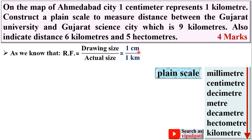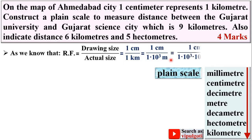Since both units are different, we convert kilometer into centimeter. One kilometer equals 10³ meters, and one meter equals 10² centimeters, so one kilometer equals 10⁵ centimeters. Therefore the centimeters cancel and RF equals 1 upon 10 raised to 5.